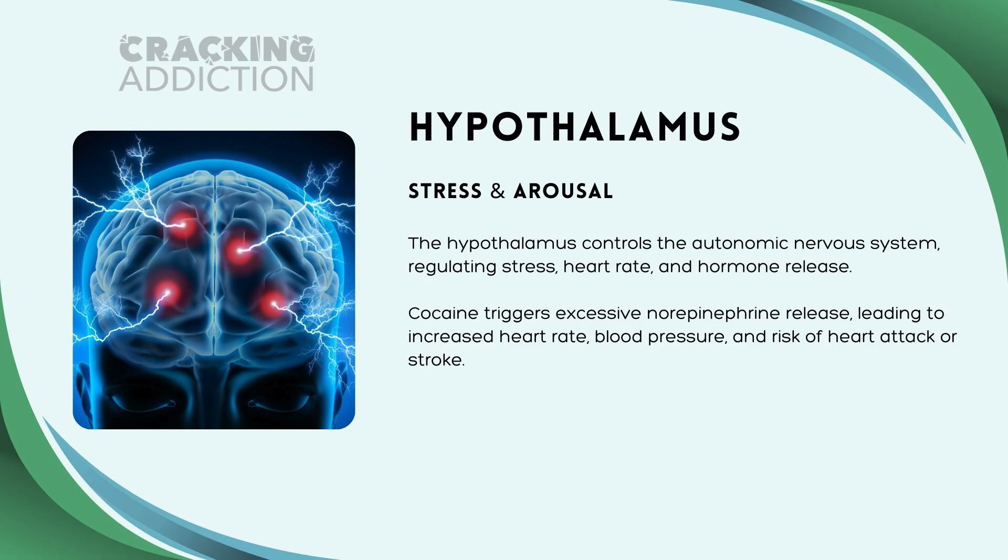Let's talk about stress and arousal in the hypothalamus. The hypothalamus controls the autonomic nervous system and regulates stress, heart rate, and hormone release. Cocaine triggers excessive norepinephrine release from the hypothalamus, leading to increased heart rate, blood pressure, and the risk of heart attack or stroke.